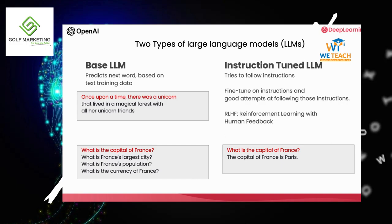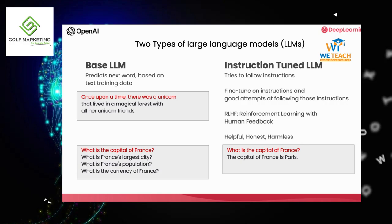Because instruction-tuned LLMs have been trained to be helpful, honest, and harmless, they're less likely to output problematic text such as toxic outputs, compared to base LLMs. A lot of the practical usage scenarios have been shifting toward instruction-tuned LLMs. Some best practices on the internet may be more suited for a base LLM, but for most practical applications today, we would recommend most people instead focus on instruction-tuned LLMs, which are easier to use and, because of the work of OpenAI and other LLM companies, are becoming safer and more aligned.